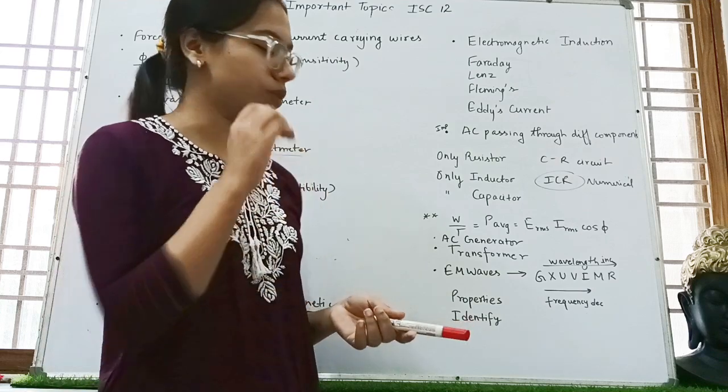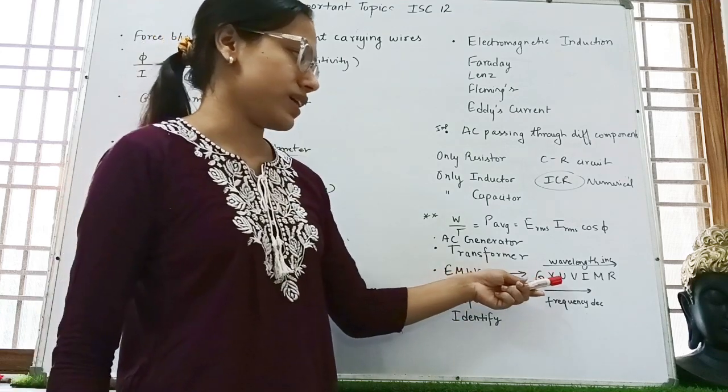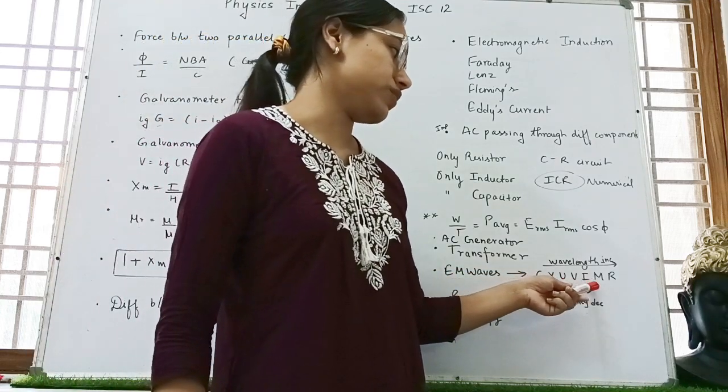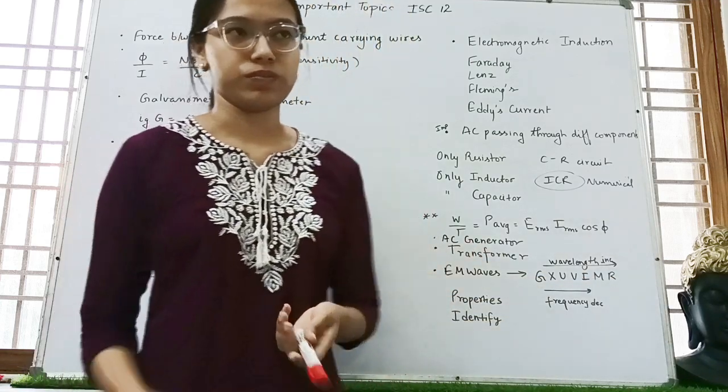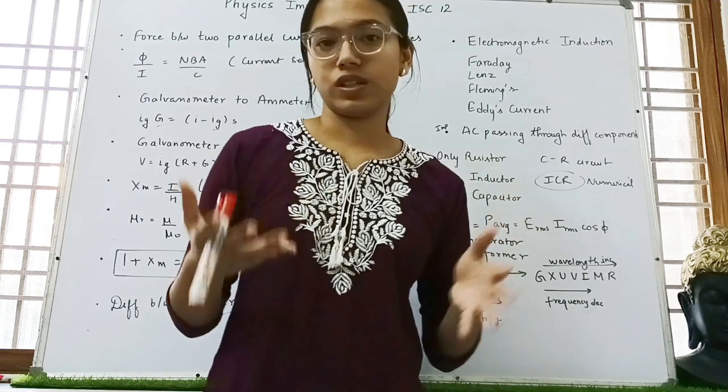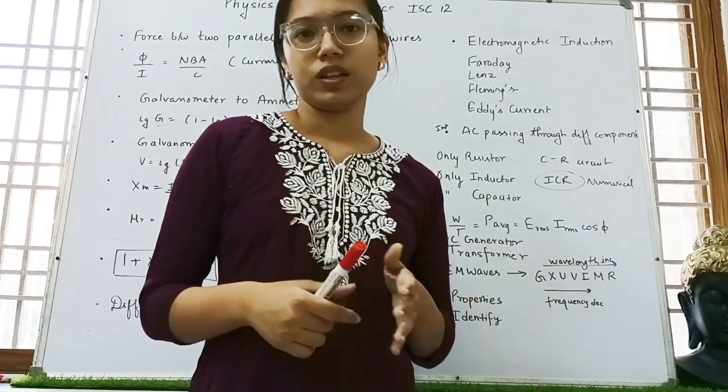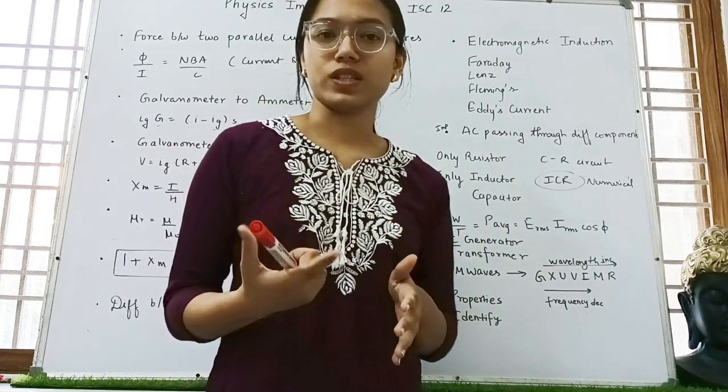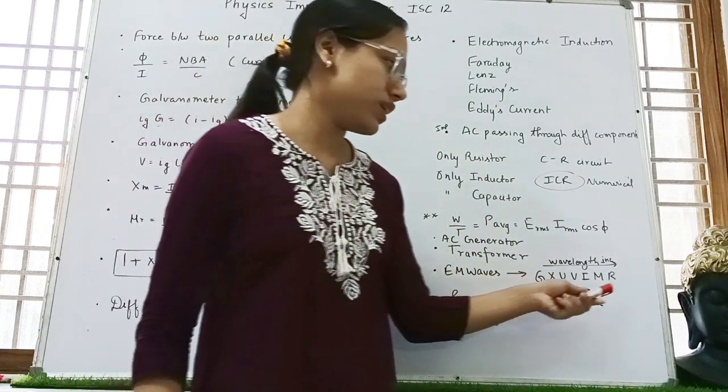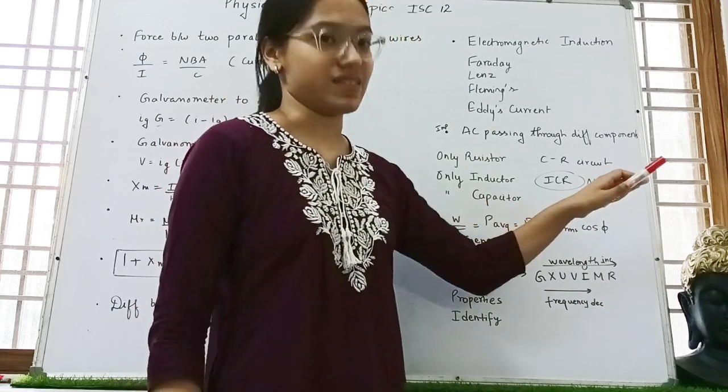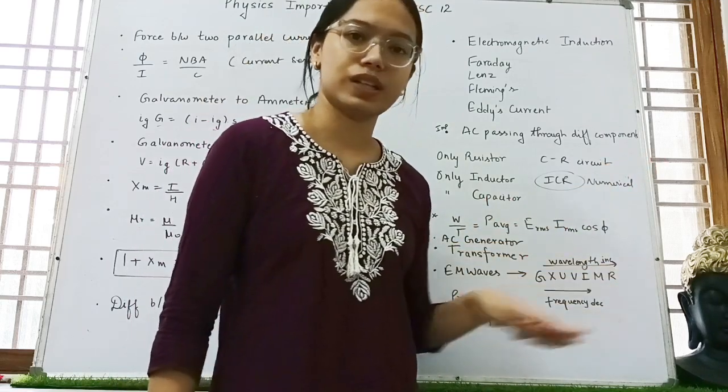This is gamma, X-ray, ultraviolet, visible light, infrared, microwave and radio wave. They will ask you the property or they may give you that it causes heating effect or any other property. They may give you the wavelength or the frequency. You have to identify the electromagnetic phase. So frequency decreases here and wavelength increases when we go from left to right.